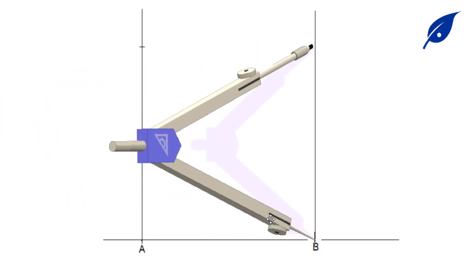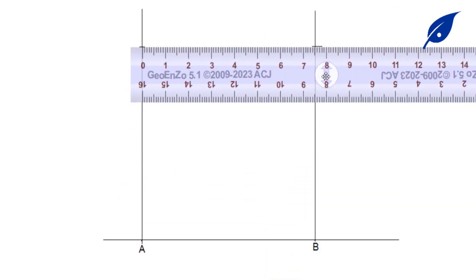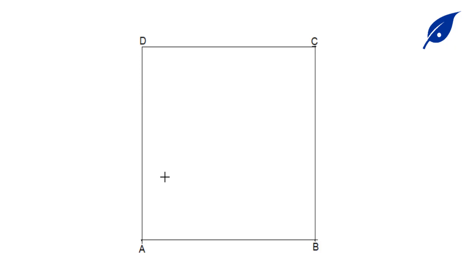line AB and mark the points at the required length of the side of the square. Then draw the perpendicular lines and get the remaining side points C and D. So now we have our square.